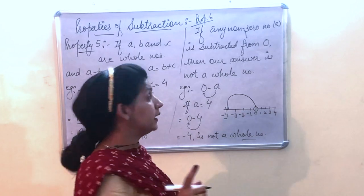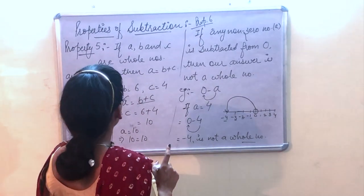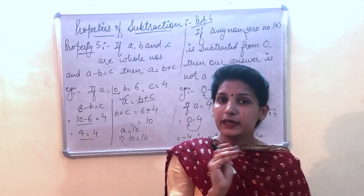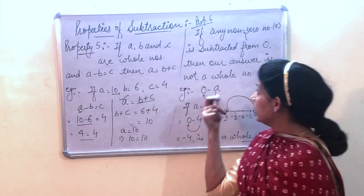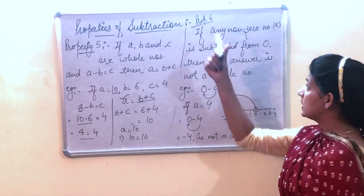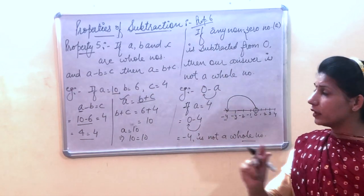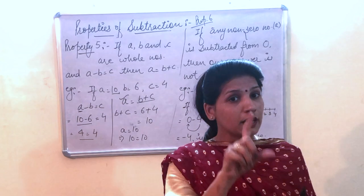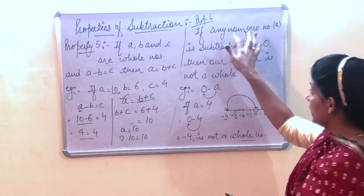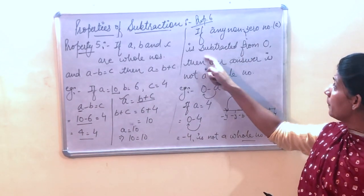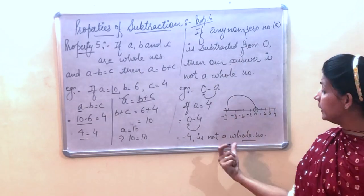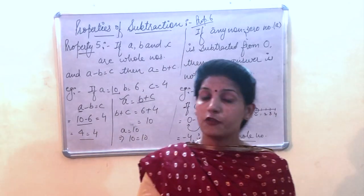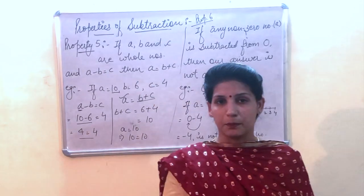Properties 4 and 6 are related but reversed: property 4 says that if we subtract 0 from any whole number we get a whole number, but property 6 says that if we subtract any non-zero whole number from 0, we do not get a whole number. These are all the properties of subtraction for whole numbers.